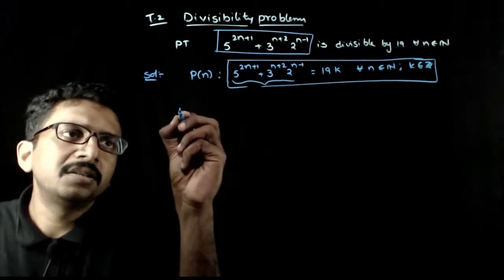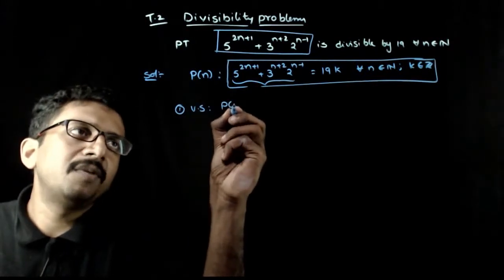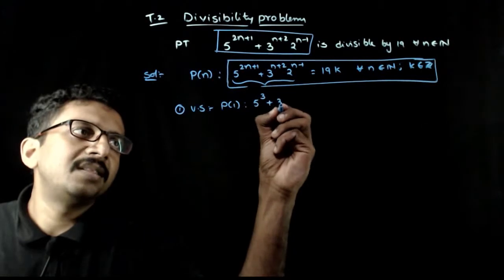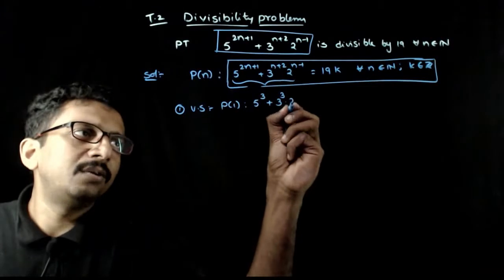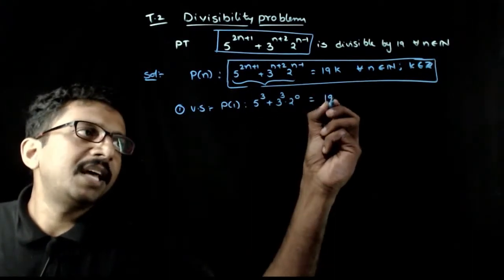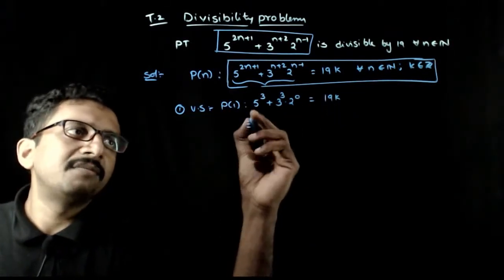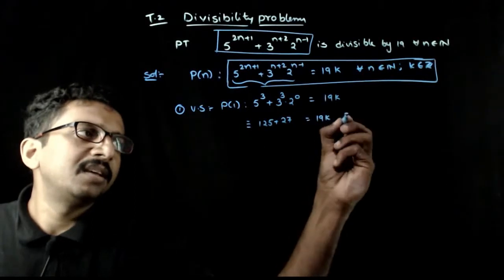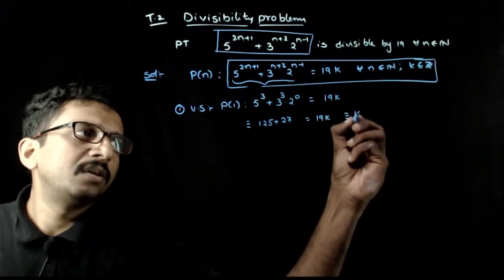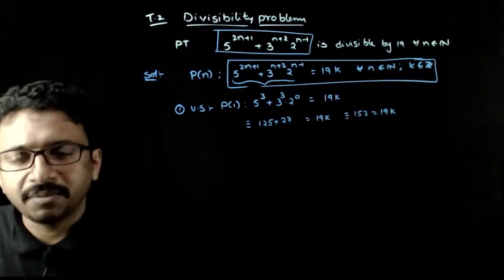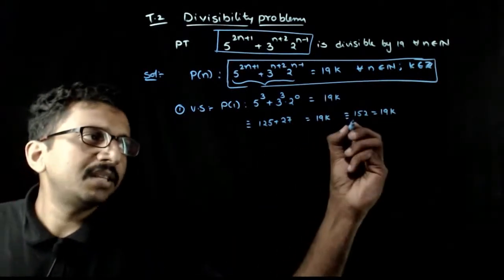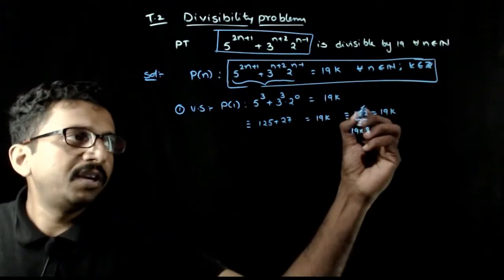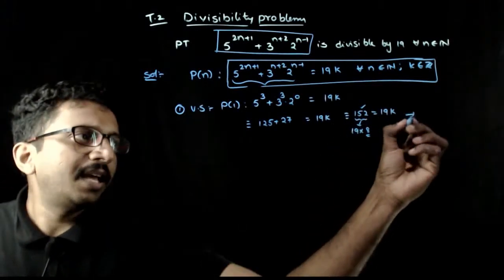Step 1: Verification. P(1) is nothing but 5^3 + 3^3 · 2^0 = 19k for some integer k. That is 125 + 27 = 152. Can you see that 152 is nothing but 19 times 8? So 152 is of the form 19k. Hence P(1) is true.